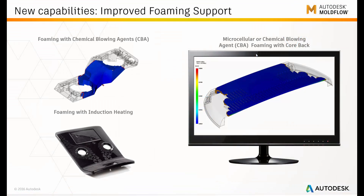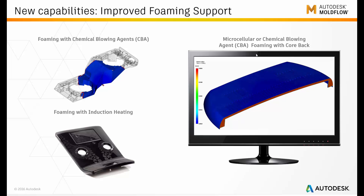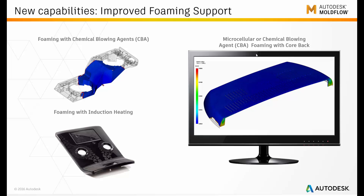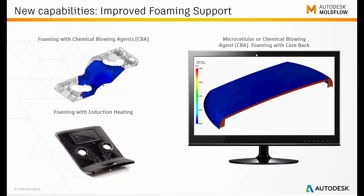We extended the foaming capabilities to not only support the MuCell capabilities we had in prior releases, but we now also support chemical blowing agents as well as the ability to use a core back simulation. So once the foamed part is filled, you move one of the cores back, creating underpressure in the interior of the part, which promotes foam growth and creates a very nicely foamed structure. We also added the ability to use induction heating with the foaming process.